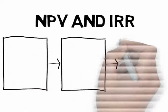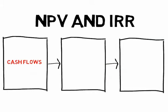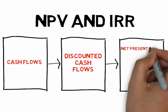Once all the relevant cash flows have been determined, the capital investment analyst is ready to make the discounted cash flow computation and derive the net present value, or NPV, and the internal rate of return, or IRR.